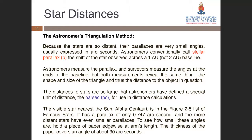Of course the stars are so distant, and their parallaxes are very small angles, usually expressed in arc seconds. Astronomers conventionally call stellar parallax the shift of the star observed across 1 AU, not a 2 AU baseline. Both measurements reveal the shape and size of the triangle and therefore the distance to the object. The visible star nearest to the sun, Alpha Centauri, is 4.2 light years away but has a parallax of 0.747 arc seconds, and more distant stars have even smaller parallaxes. Hold a piece of paper edgewise at arm's length — the thickness of the paper covers an angle of about 30 arc seconds.